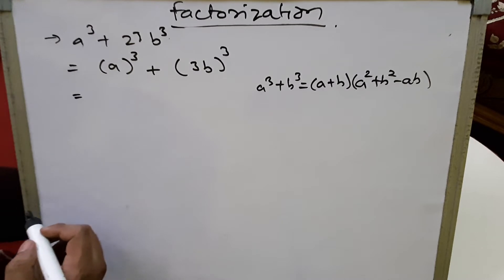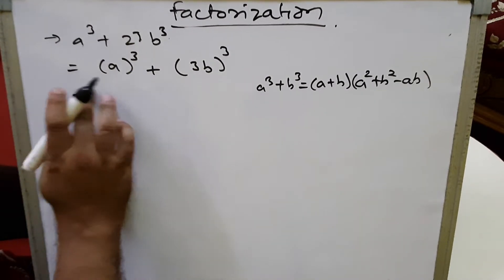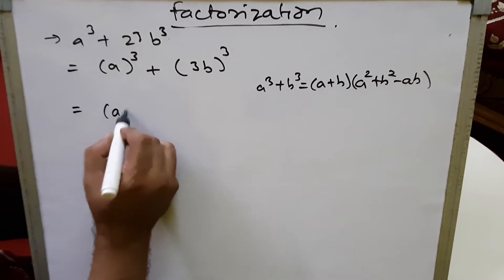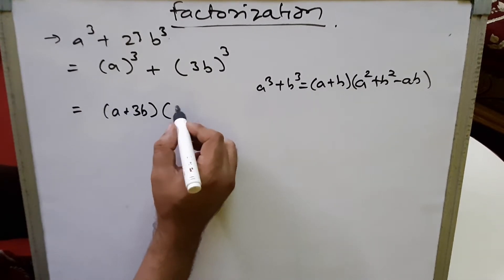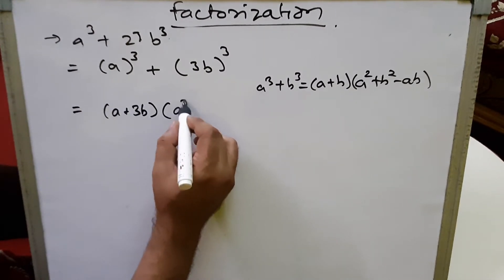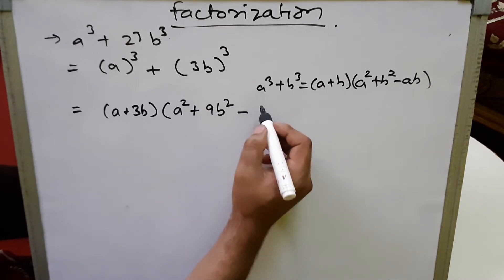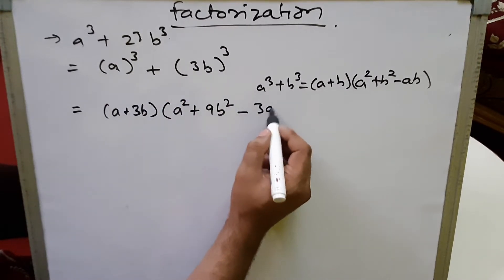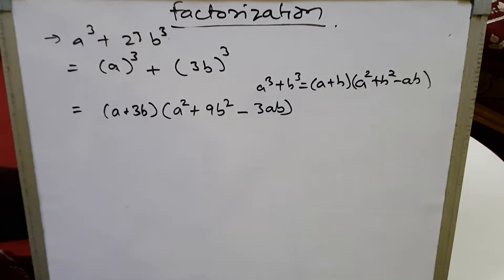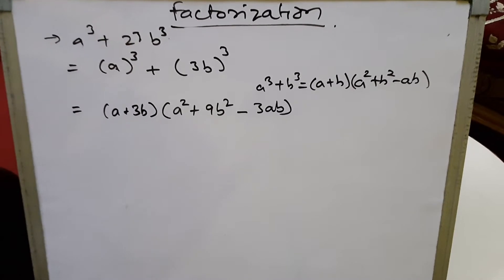Using the sum of cubes identity, we get (a + 3b)(a² + 9b² - 3ab). This is the factorized form. Let's look at another sum.